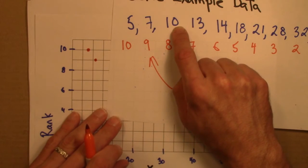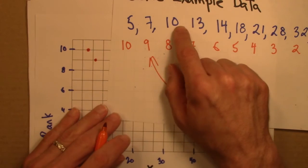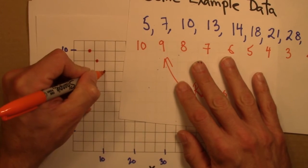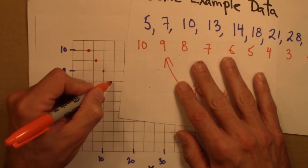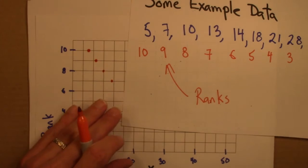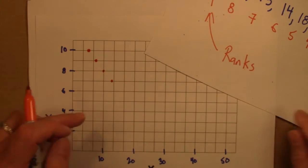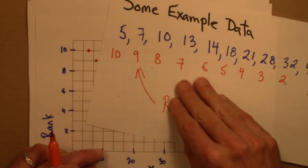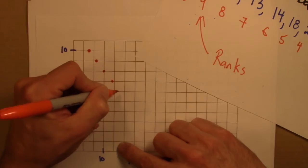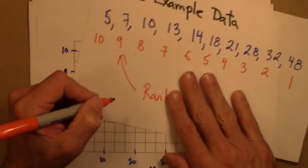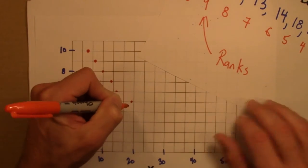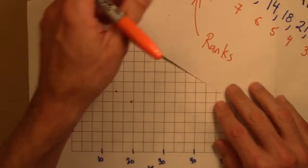The data point 10, these are x's, these are ranks, the data point 10 has a Rank of 8. 13 has a Rank of 7. And I can keep going like this. What's next? 14. 14 has a Rank of 6. 18 has a Rank of 5. 21 has a Rank of 4. That's my fourth largest data point.